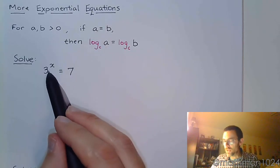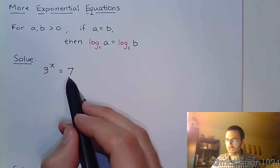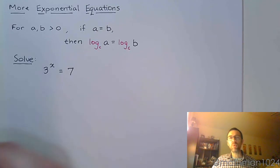So look at this: 3 to the x is equal to 7. Well, 3 and 7 don't have a common base, but what we can do is apply a log to both sides.